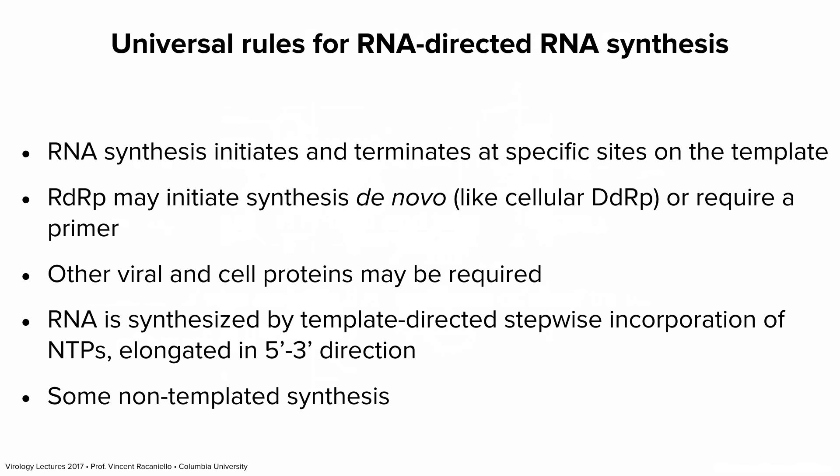RNA-directed RNA synthesis follows rules very similar to DNA-directed DNA synthesis. It begins and terminates at specific sites on the template — polymerase doesn't start copying randomly, it starts and stops at very specific places. The RNA-dependent RNA polymerase, RDRP, may need a primer or may not. It can initiate de novo — without a primer — just like cellular DNA-dependent RNA polymerase, which doesn't need a primer but needs a promoter sequence. Many RNA-dependent RNA polymerases are like that, but some do need a primer.